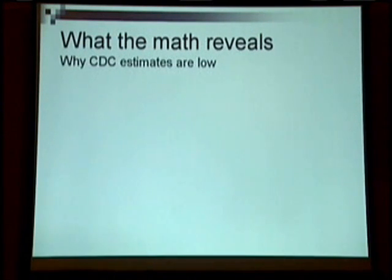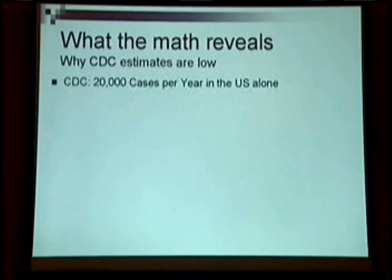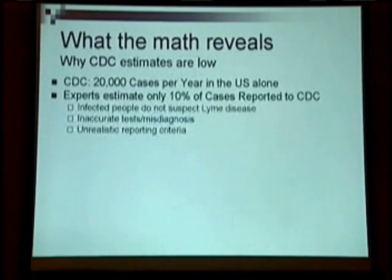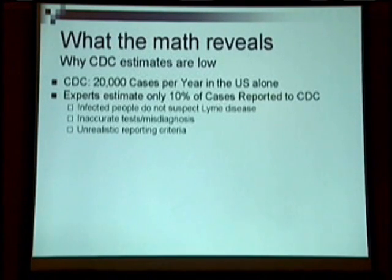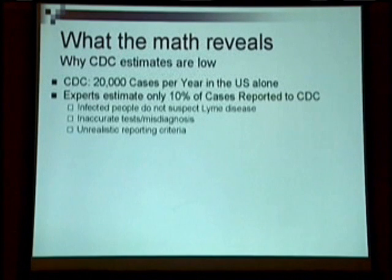Let's look at what the math reveals about how many cases of Lyme disease there are. The CDC estimated about 18,000 cases — I rounded up to 20,000. Experts estimate that only 10% of cases are reported to the CDC. The reasons for under-reporting include: infected people often don't suspect Lyme disease so they never get tested; inaccurate tests mean those who do get tested often receive a false negative; and the CDC has very unrealistic reporting criteria — they don't classify you as positive unless you are ridiculously positive on the test.